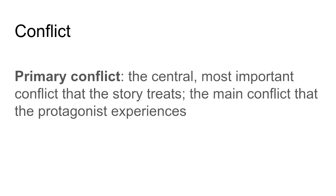In Paper 2, you are going to be concerned with identifying, defining, and analyzing the primary conflict of your chosen short story. This primary conflict is going to be the central, most important conflict that the story deals with — the main conflict that the protagonist, who is the main character, experiences. It's going to be that conflict that rises above everything else and is dominant in the story.